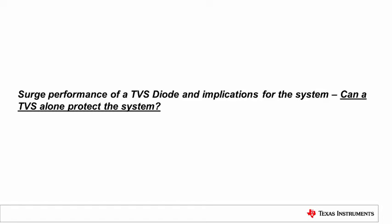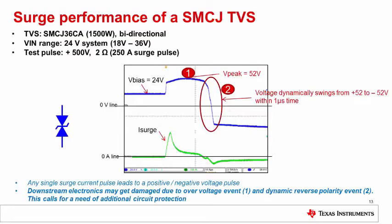Can a TVS diode alone protect the system, or do we need more protection? Consider a typical 24 V supply system with an operating voltage range of 18 V to 36 V, where a 1.5 kW bidirectional TVS is selected. During a positive 500 V, 2 ohm surge test, the voltage spikes to 52 V and then swings down to negative 52 V within a span of one microsecond. The downstream electronics may get damaged due to this overvoltage event and the dynamic reverse polarity event during the surge test.